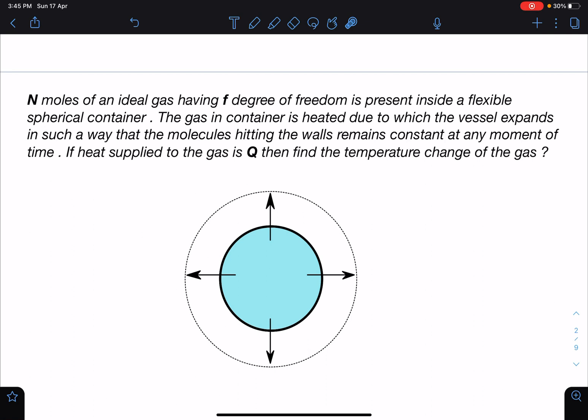This is for any radius. If heat supplied to the gas is Q, then find the temperature change of the gas. So we have to calculate the temperature change.